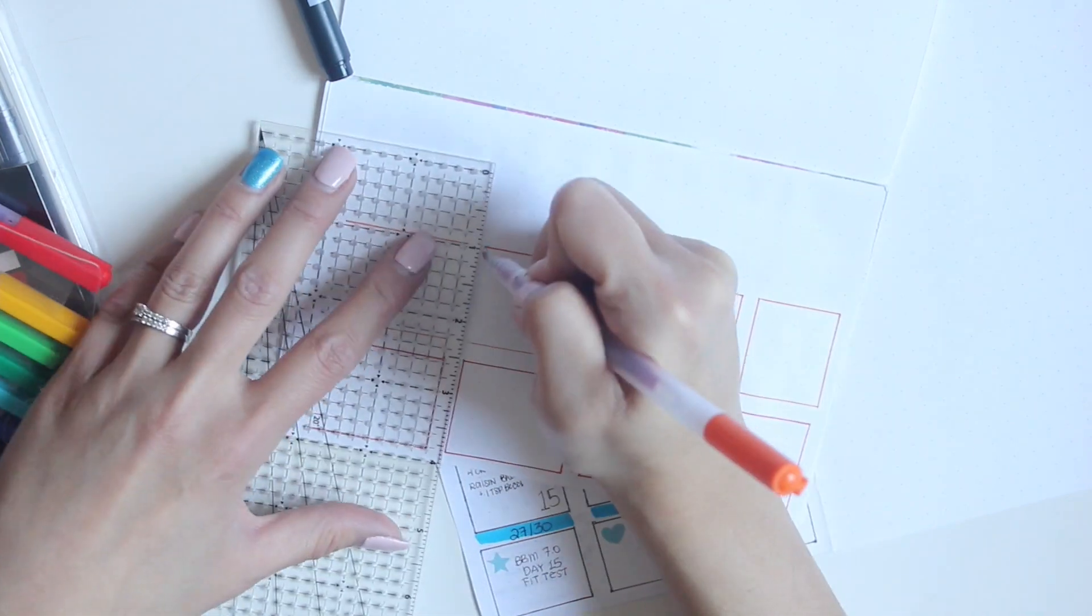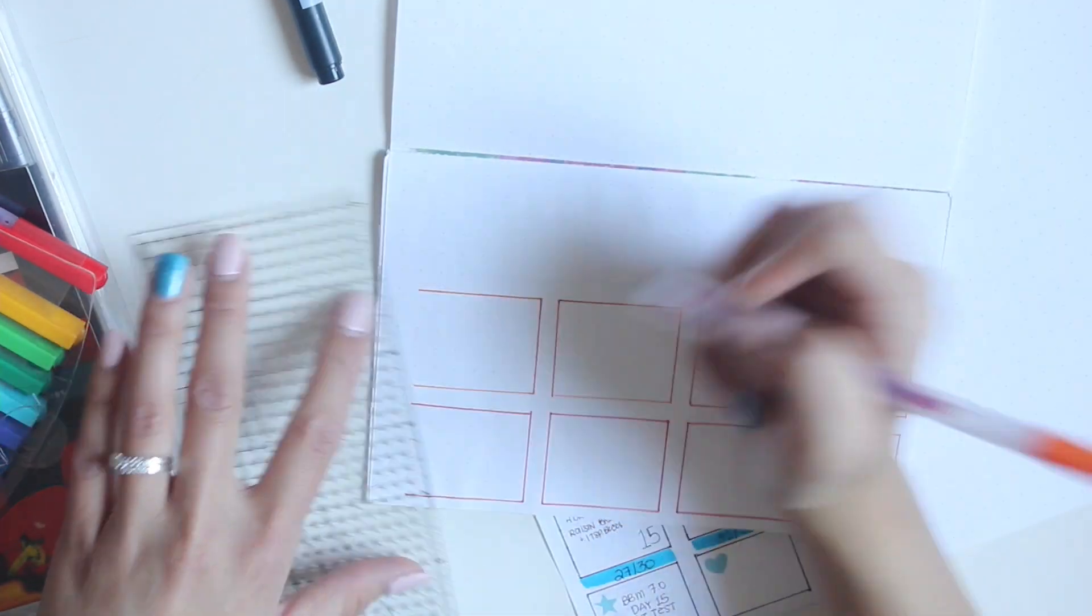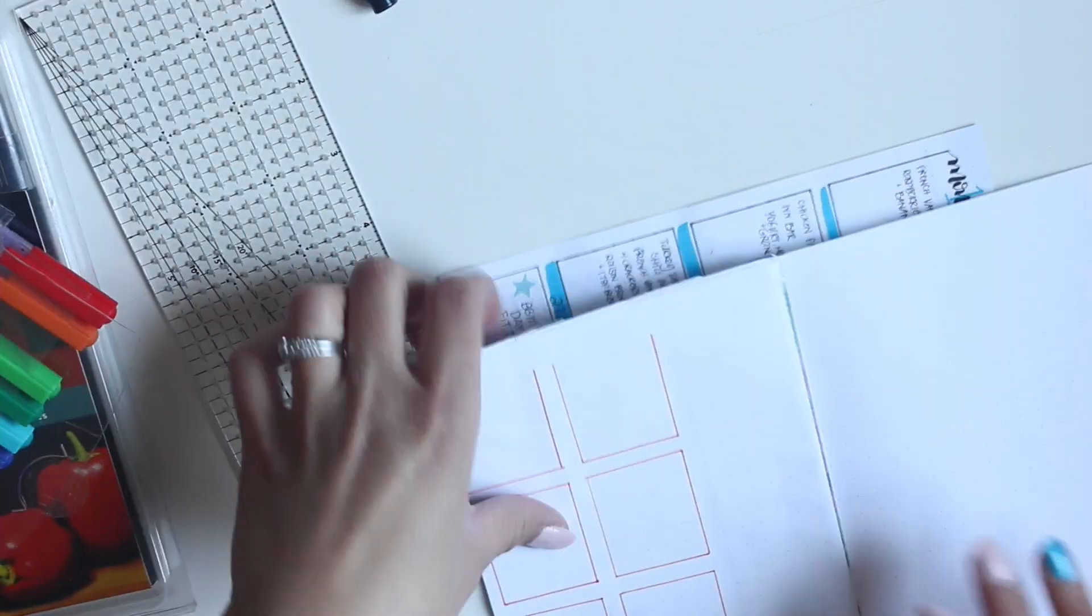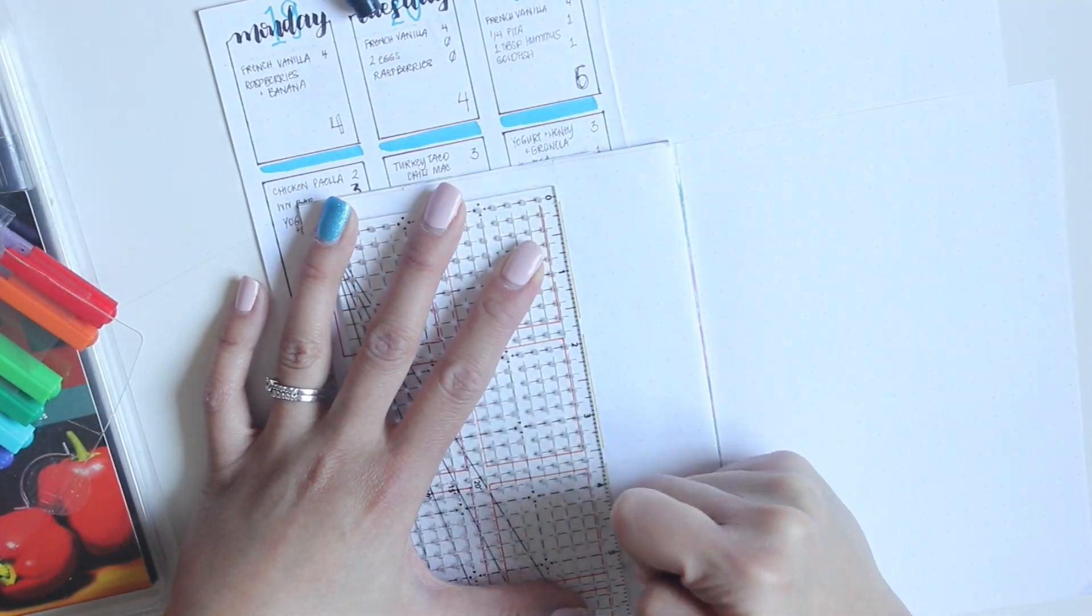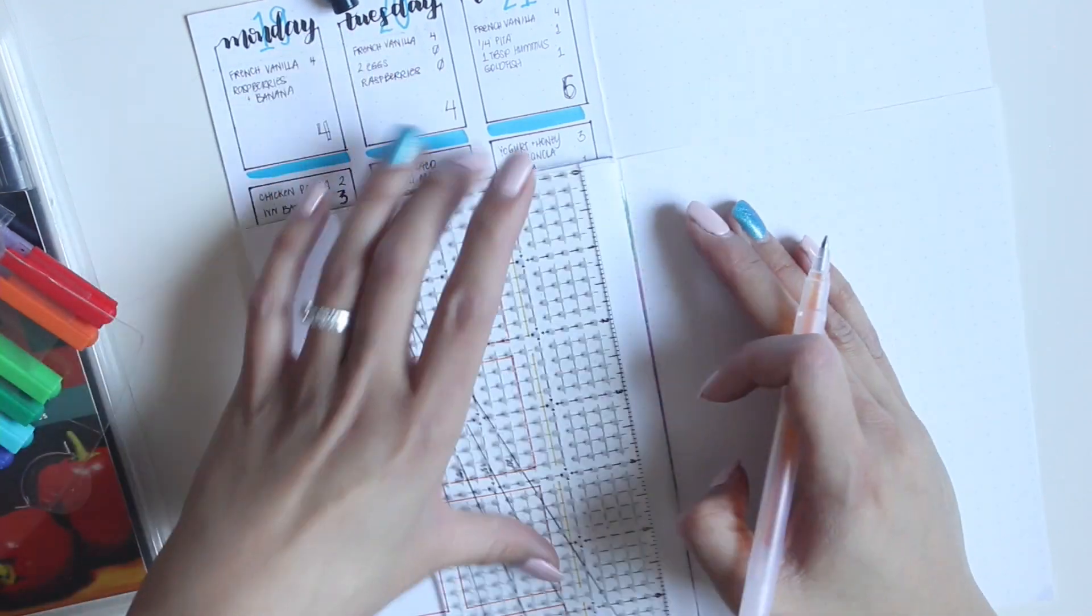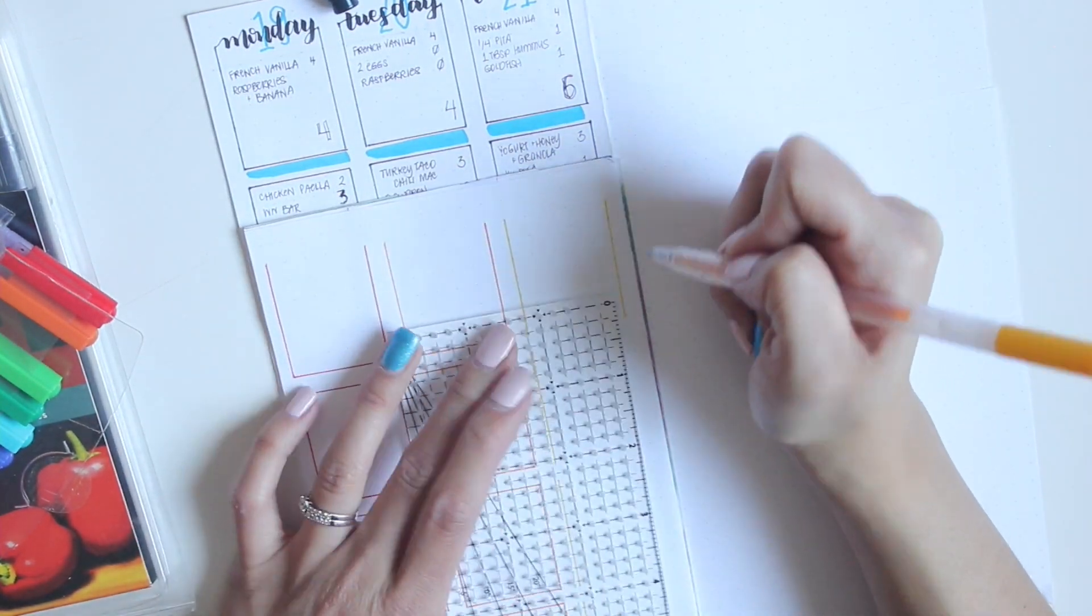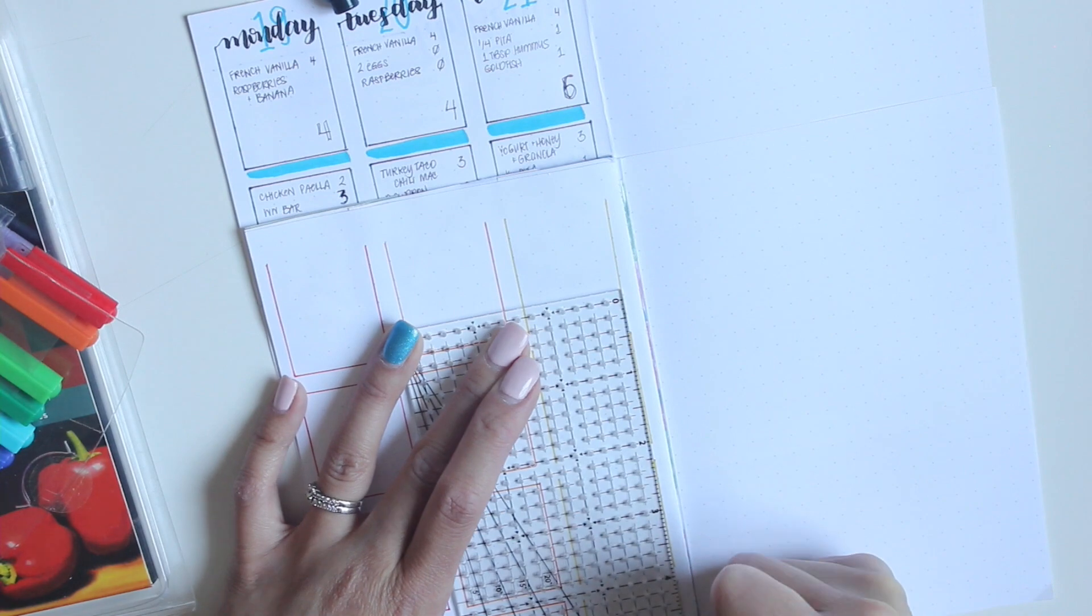So right now I'm just drawing out the boxes in the different rainbow colors of the pens, and I actually really like these pens. The only thing with them though is they do shadow a little bit, and because I think I'm pressing way too hard, it kind of does bleed through a little bit.